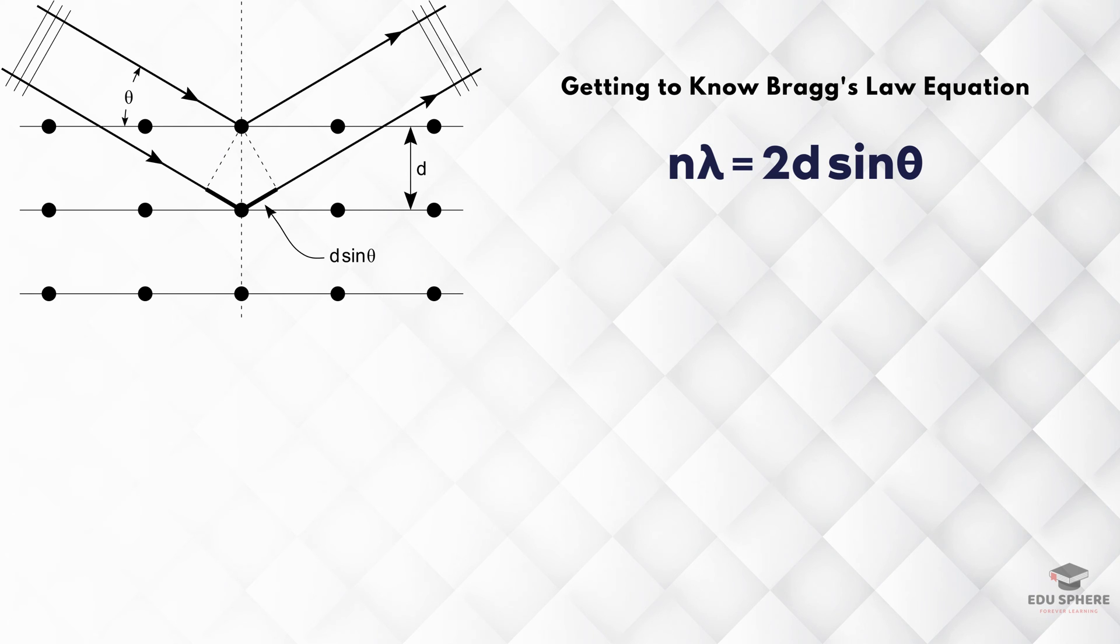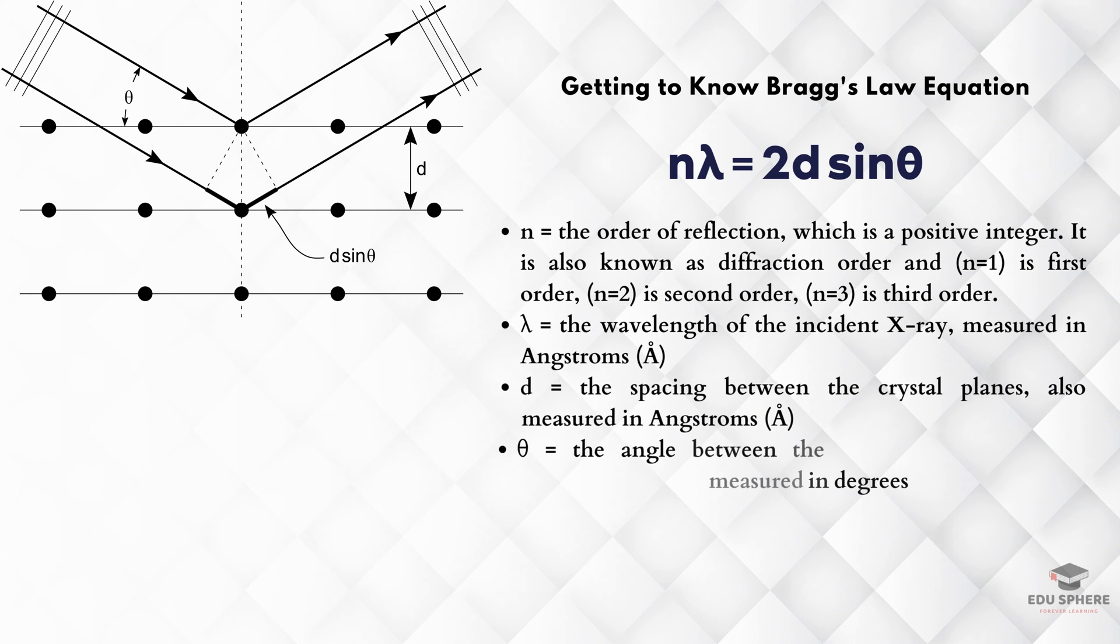In this formula, n is the order of reflection, which is a positive integer. Lambda is the wavelength of the incident X-ray, and d is the spacing between the crystal planes. Both are measured in angstroms. Finally, theta is the angle between the incident ray and the scattering planes, and it is measured in degrees.